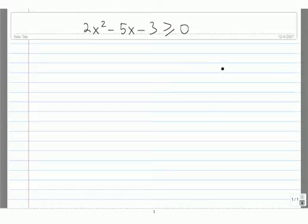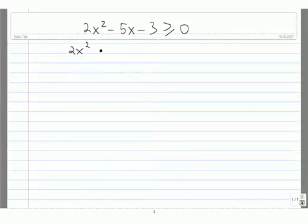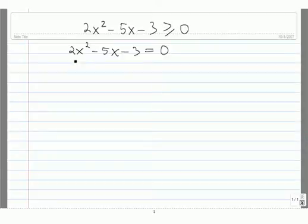To solve this inequality symbolically, we need to start by making a number line. The first thing that goes on our number line are the values that make this function equal to 0. We have 2x squared minus 5x minus 3 equals 0, and we need to solve this. The easiest way to solve this is by factoring 2x squared minus 5x minus 3.